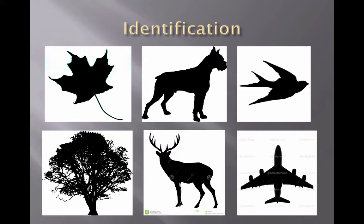Nobody ever pulled me aside as a kid and taught me about shape language. You don't get that until you're a little older. But this is part of the identification phase. Your experience with shapes and objects around you — for example, can you tell me what type of tree that is? Someone said oak tree — it is an oak tree. There's a difference between an oak tree and a spruce or birch, and you start learning those differences in shape language. So if I'm doing an illustration of the Pacific Northwest, you're going to have pine trees, because it's a different type of tree that grows in a different environment.